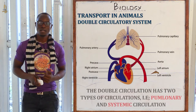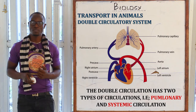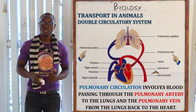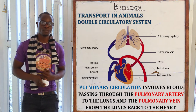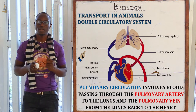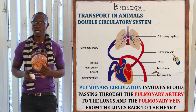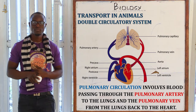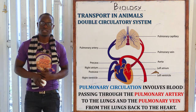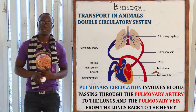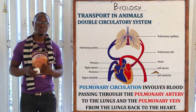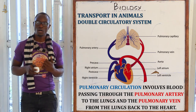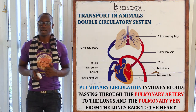Double circulation involves blood passing through the heart twice. There are two types of circulation found in the heart. The first is pulmonary circulation, involving the pulmonary blood vessels — the pulmonary vein and the pulmonary artery. Blood from the right side of the heart goes through the pulmonary artery to the lungs, and the pulmonary vein brings blood back from the lungs to the heart. The blood is at very low pressure, which prevents rupture of the capillaries and allows enough time for it to be oxygenated — that is, in the lungs, CO2 is removed and replaced with oxygen.